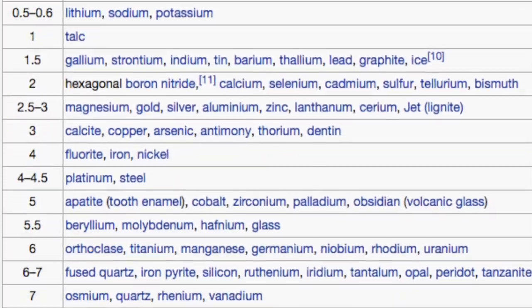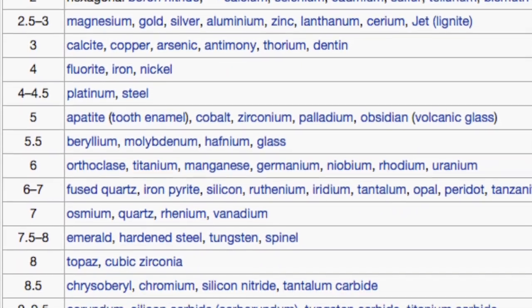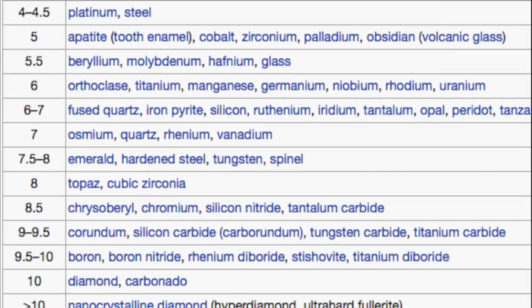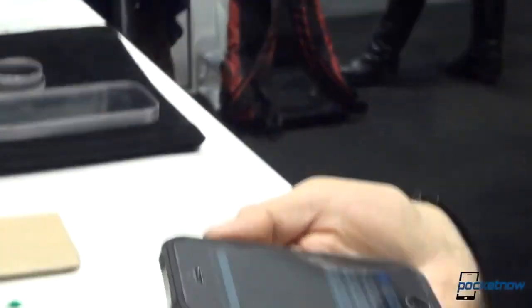But when we check the Mohs hardness scale again, we find the Mohs hardness for sapphire is much higher than the Gorilla Glass. In other words, only the diamond can scratch the sapphire in the world.